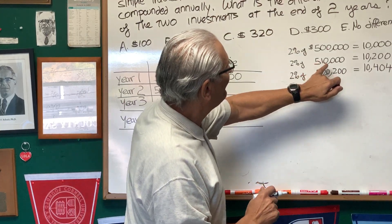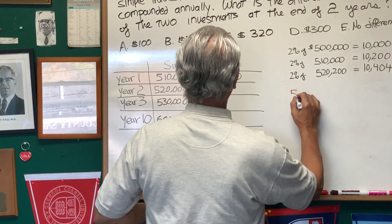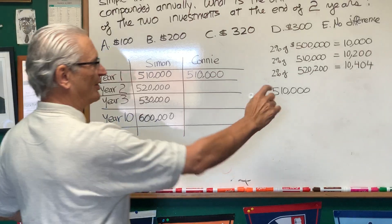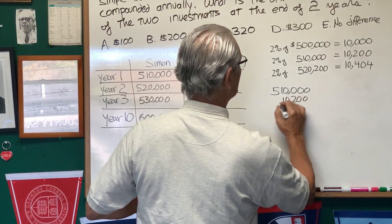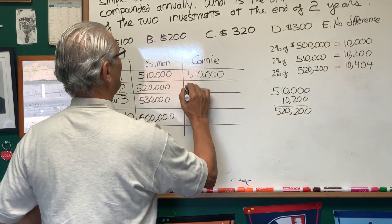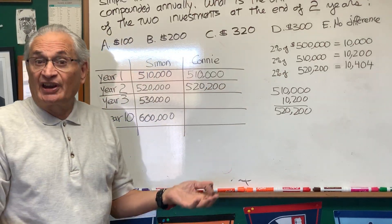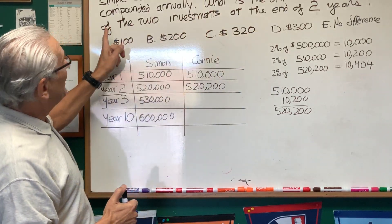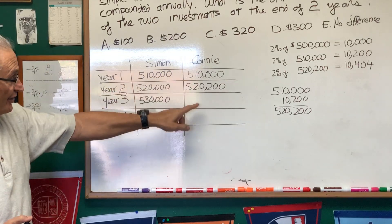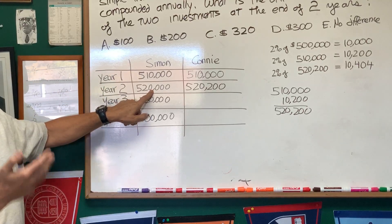So 2% of $510,000 is $10,200. So if we add that to the $510,000, at the end of the second year we're going to add $10,200 to get $520,200. At this point we can answer the question: what is the difference in values of the two investments? You can see at the end of two years, Connie, with the compound interest, has $200 more than the value of Simon's investment at simple interest.